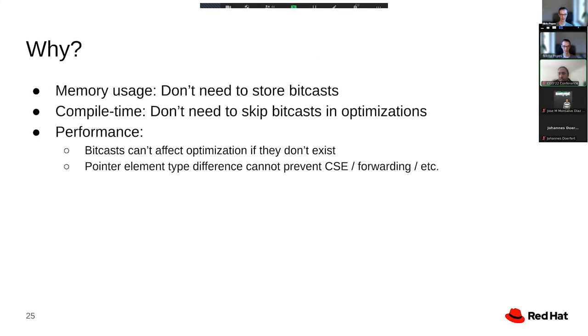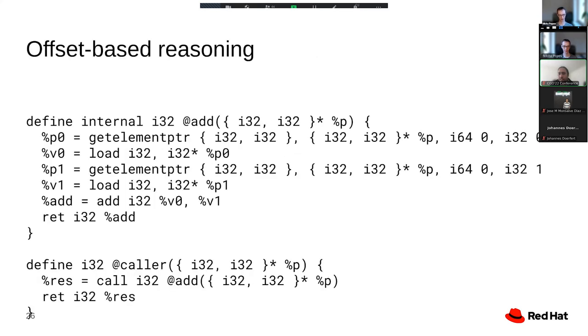And then the third performance-related aspect I want to highlight. I wouldn't really call this one a direct benefit of opaque pointers, because you can do the same thing using typed pointers. It's more that opaque pointers force us to implement optimizations in a certain way that is beneficial to optimization power. To illustrate that, I'm using an example from argument promotion.